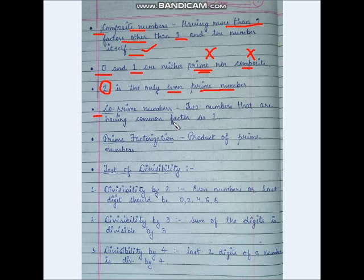Co-prime numbers are two numbers that have a common factor of only 1. That means they are only divisible by 1, and 1 is the only common factor between them. So those numbers are called co-prime numbers.